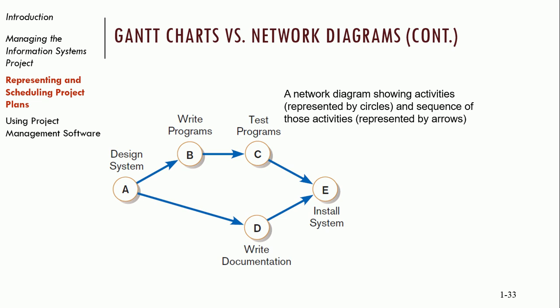Installing the system has two dependencies — we can't do it unless we've tested everything and we also have to have our documentation. So that task has dependencies on both C and D. Please don't confuse network diagram in project management with a network diagram in IT — they're very different. In project management, a network diagram shows how the different tasks relate to each other. If asked on a test, you'd say it shows how tasks are related, what the dependencies are — a nice visual representation of how everything is connected.